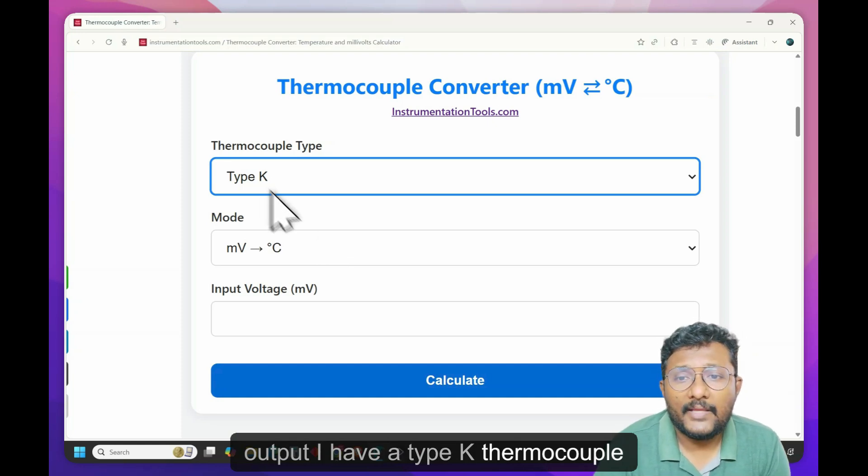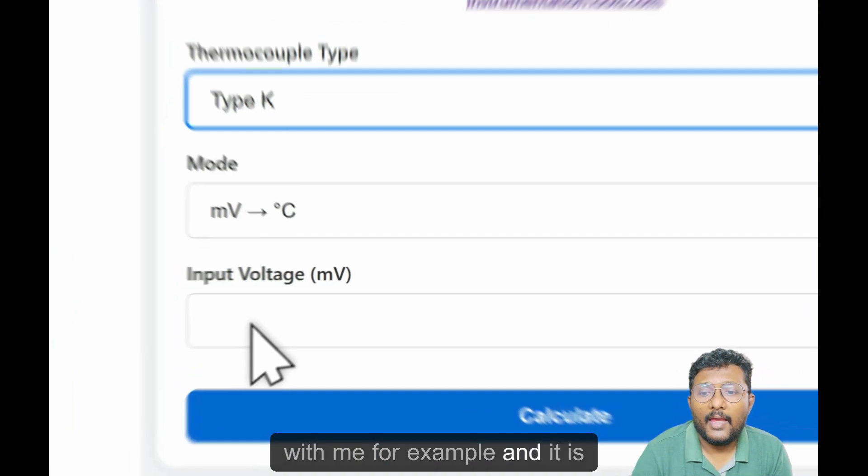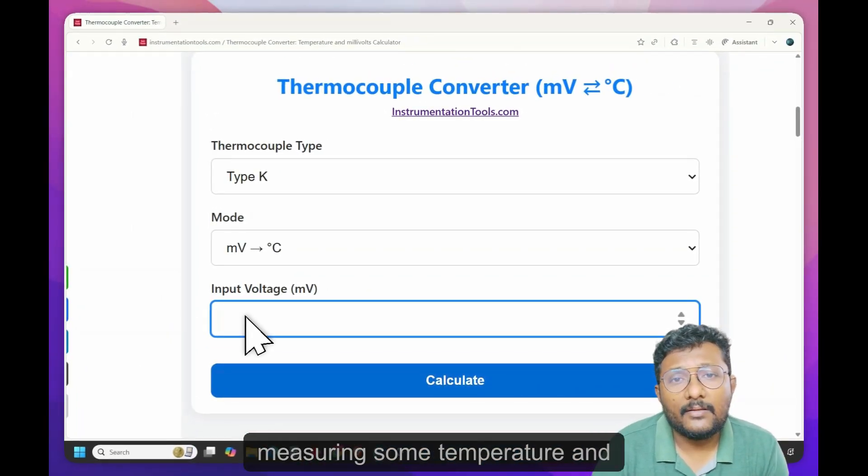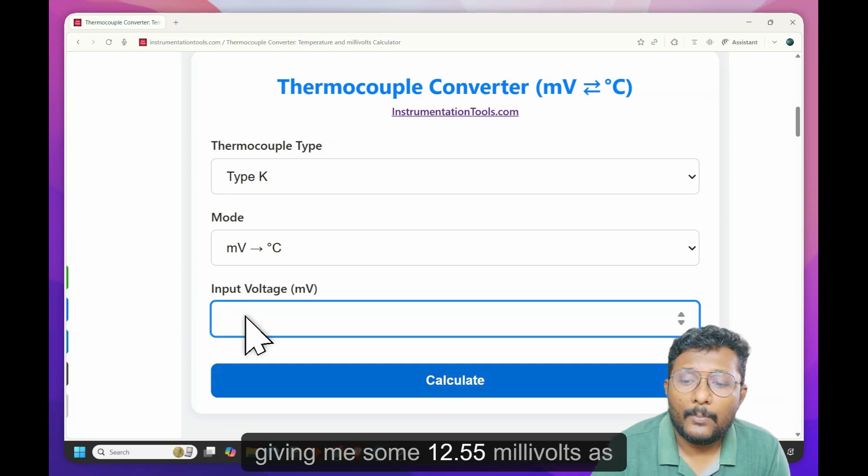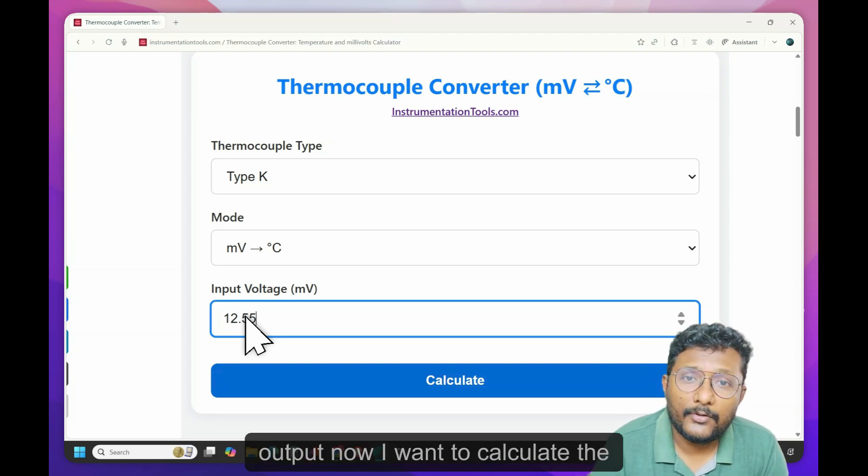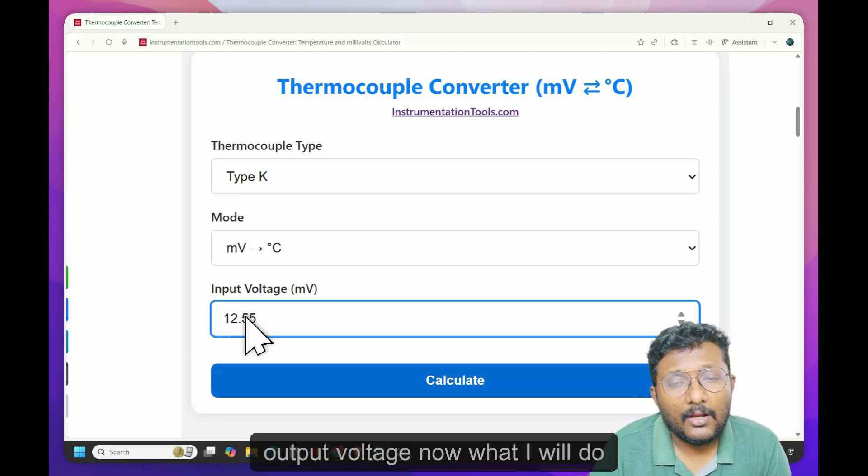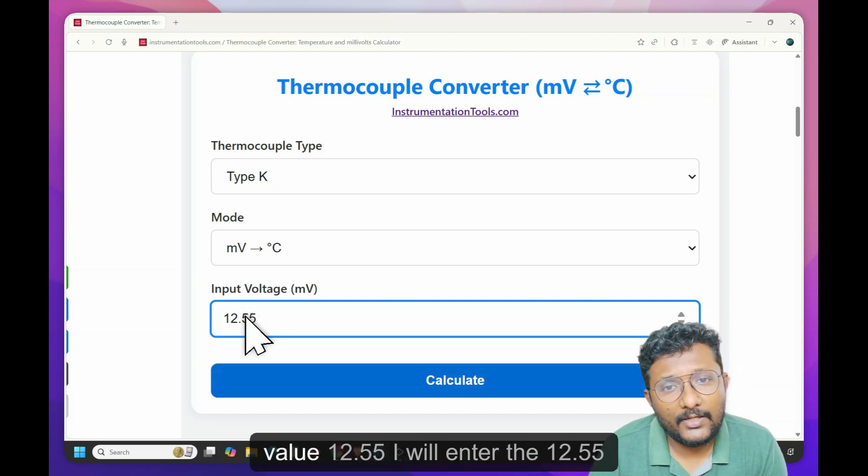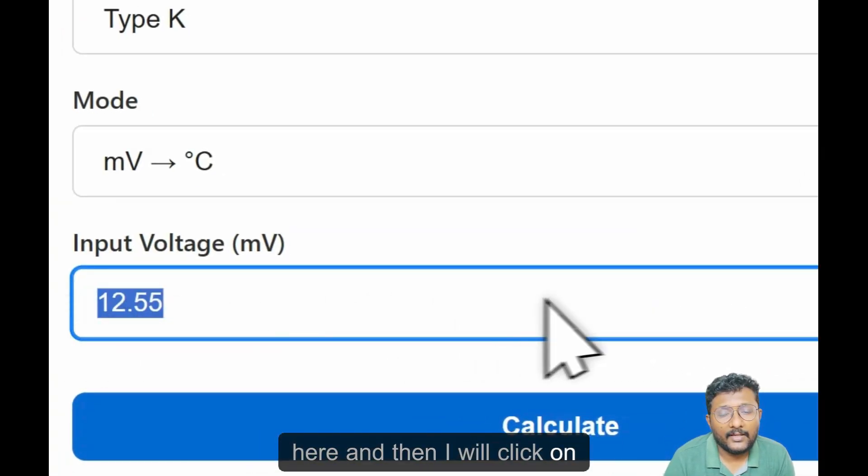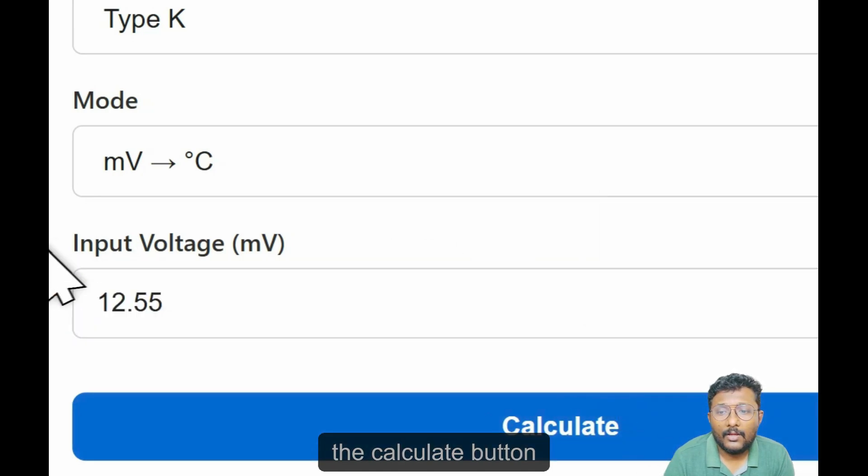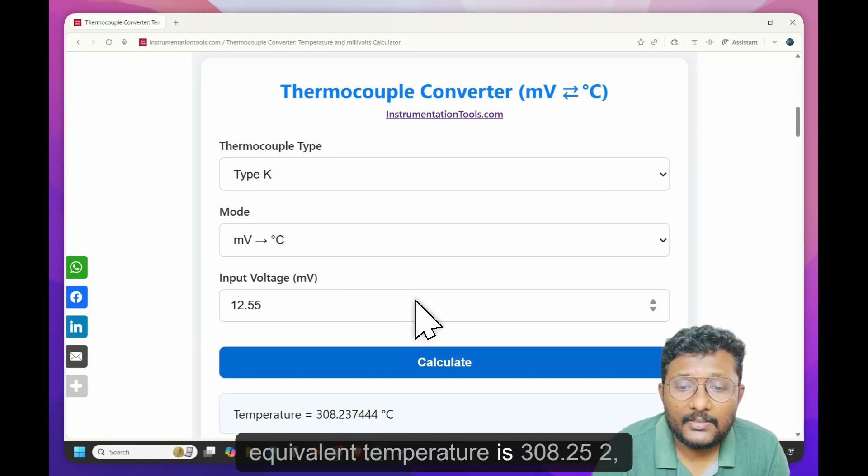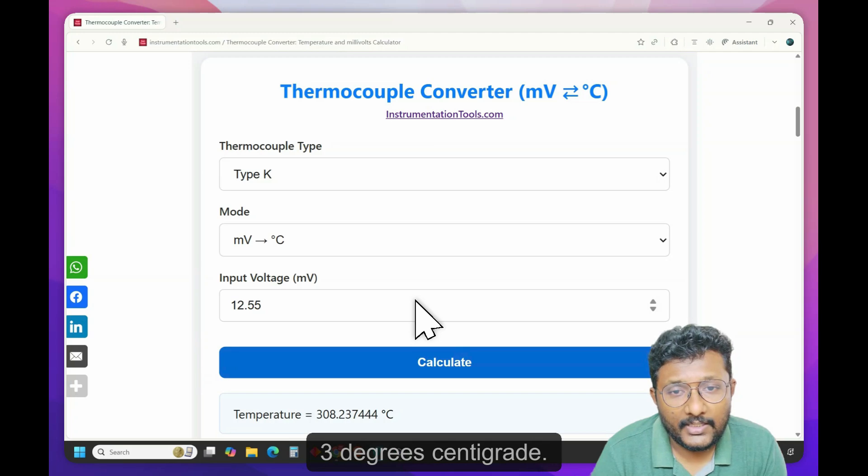I have a type K thermocouple with me for example. And it is measuring some temperature and giving me some 12.55 millivolts as output. Now I want to calculate the equivalent temperature for that output voltage. Now what I will do, I know the value, right? That voltage value 12.55. I will enter the 12.55 here and then I will click on the calculate button. Equivalent temperature is 308.23 degree centigrade.